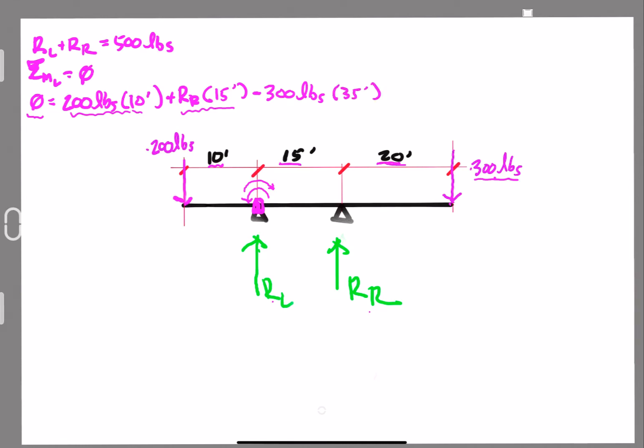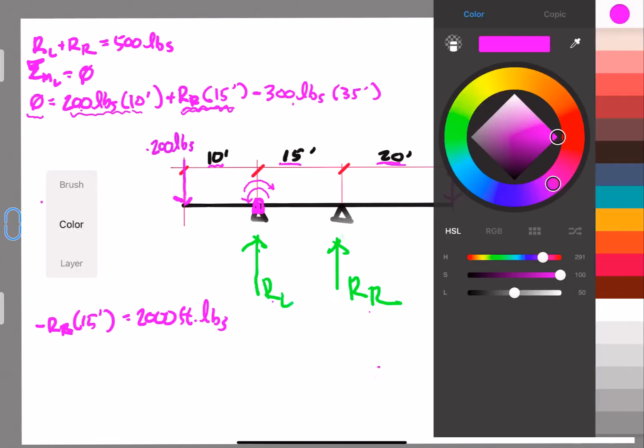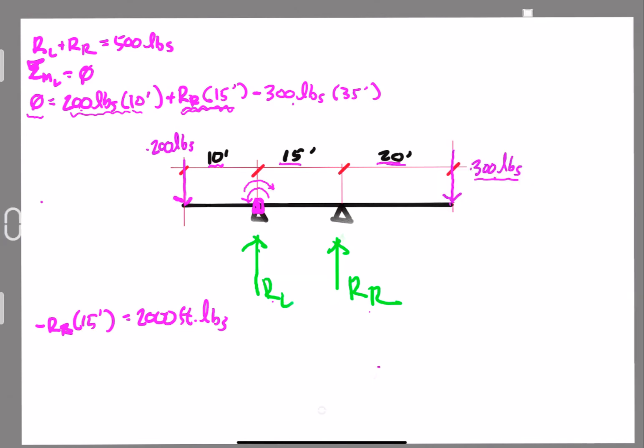Okay? A little bit of simple algebra. We'll take reaction right times 15. We'll move it over to the other side of the equation. When we do that, we're basically subtracting rR times 15 from both sides. So we'll end up with negative reaction right times 15 feet equals, and now we can multiply. We can find what our moments are in foot-pounds. 2,000 foot-pounds, right? And then here, 300 times 35, we've got to get our calculators out. 300 pounds times 35 feet is going to be 10,500 foot-pounds. So that's going to be minus 10,500 foot-pounds.